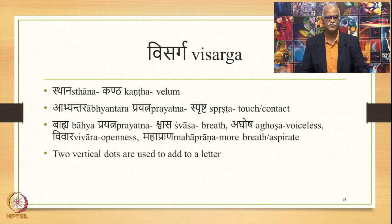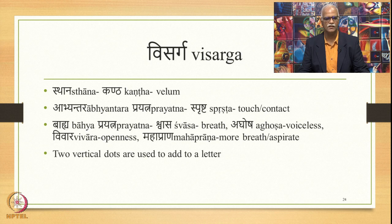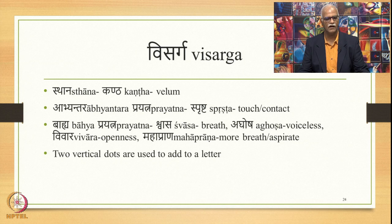The next is Visarga. The place of articulation for Visarga is Kantha or Vilam. The Abhyantara Prayatna is Sprashta — touch or contact. The Bhaiha Prayatna is Shvasa (breath), Aghosha (voiceless), and Vivara (openness). This is also described as Mahaprana — having more breath, being an aspirate sound. Visarga is written by adding two vertical dots after a vowel letter, as in aha, uhu, etc.